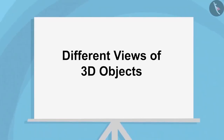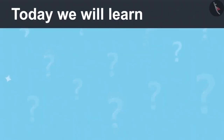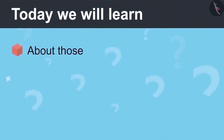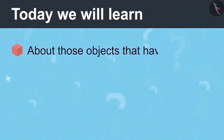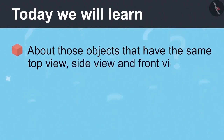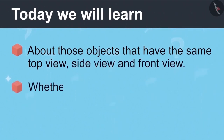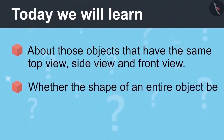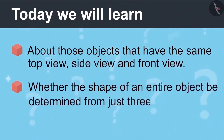Different Views of 3D Objects, Part 3. Today we will learn about those objects that have the same top view, side view and front view, and whether the shape of an entire object can be determined from just three views.